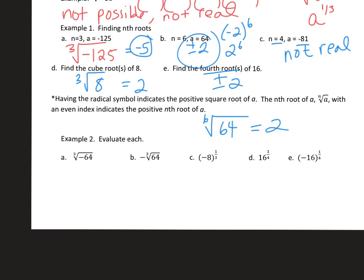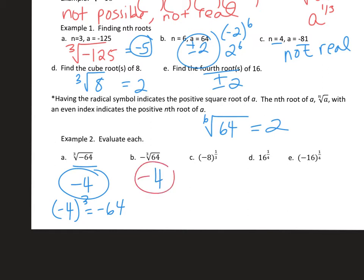Evaluate each. The cube root of negative 64 is negative 4, because negative 4 to the third power is negative 64. And then using order of operations, the negative outside means take the cube root of 64 and then take the opposite of it. The cube root of 64 is 4, so the opposite is also negative 4. With an odd root, it doesn't matter if the negative is on the inside or outside. Now 1/3 power: think of that as the cube root of negative 8. The cube root of negative 8 is negative 2, because negative 2 times negative 2 times negative 2 is negative 8.